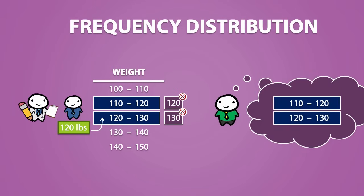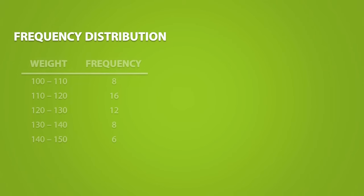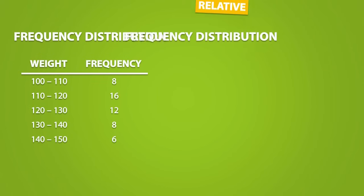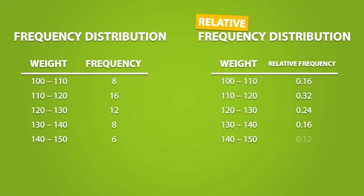Now you might be thinking, if the right interval isn't included, why don't I just rewrite my intervals like this? 110 to 119 and 120 to 129. Now the problem with this is that we don't have continuity. For example, if you weighed 119.7 pounds, there would be no interval that contains this value.